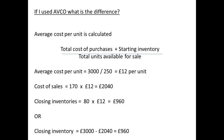Now let us do the same calculation using AVCO, with the average cost per unit being calculated. We have a total of £3,000 as cost for 250 units, so the cost per unit is £12. The cost of sales will be 170 times £12, which is £2,040. The closing inventory will be 80 times £12, which is £960.